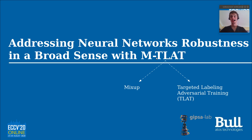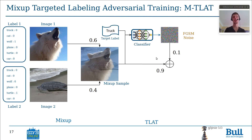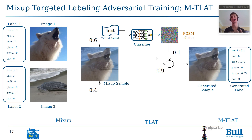So, now we have our two components of MCLate: MixUp and Targeted Labeling Adversarial Training. The idea is to combine both approaches — first apply MixUp by interpolating samples and labels of the training set, and then use our targeted labeling strategy to add adversarial patterns in the image and change the label, so as to get a new couple of samples and labels.